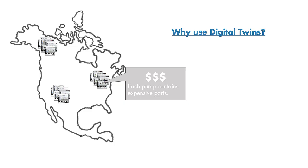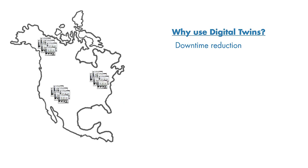Therefore, we want to prevent failures by predicting them in advance, which in turn will help us reduce downtime. We may also want to identify faults that develop in this system and get insights into what parts may need repair or replacement. This will also help us better manage our inventory.